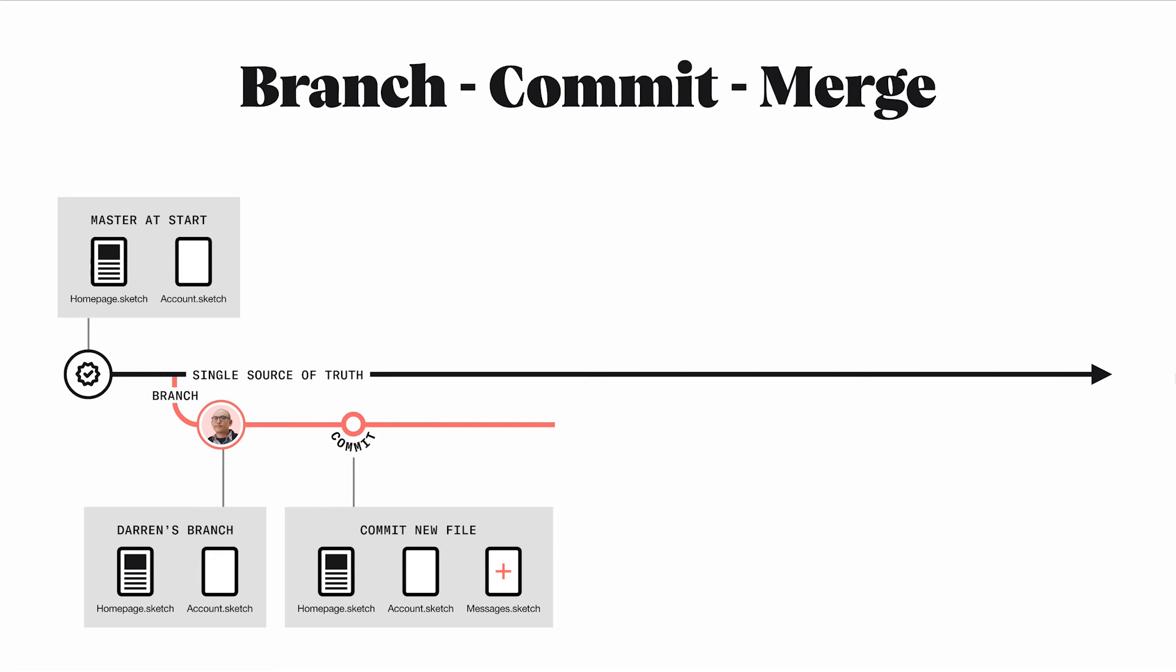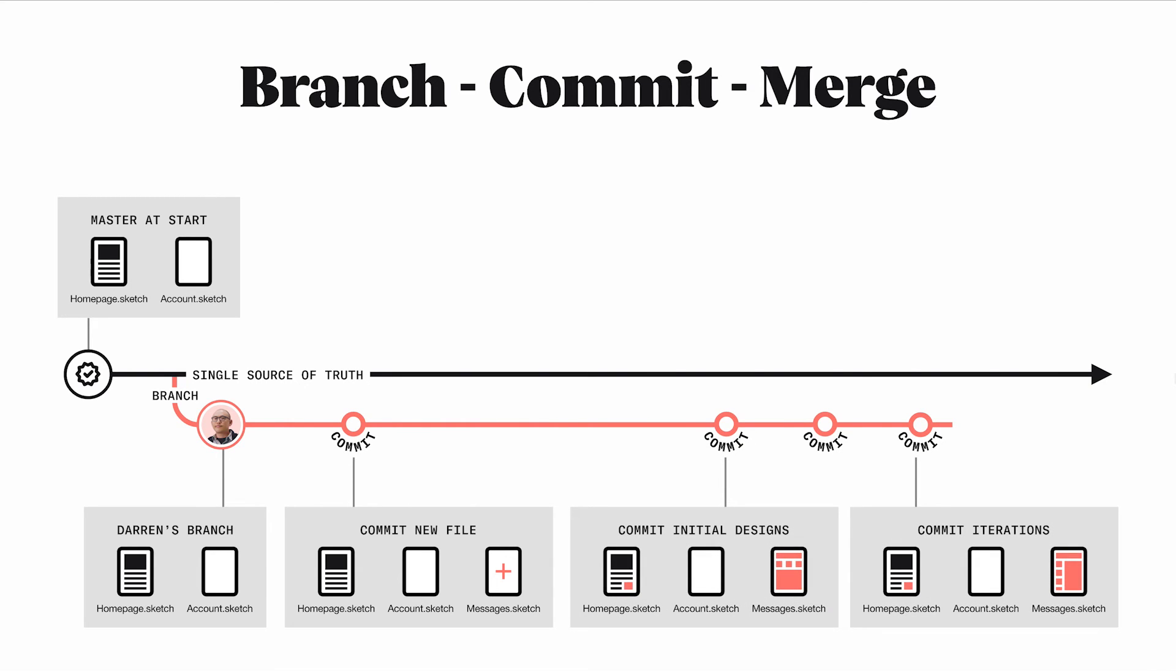For the next couple of commits, Darren makes some changes to the homepage file and also tries out a few different layouts for the new messages feature. He'll commit each time that he reaches an iteration that he wants to keep track of. This process cycles until he reaches the design that is finalized and approved by the team.